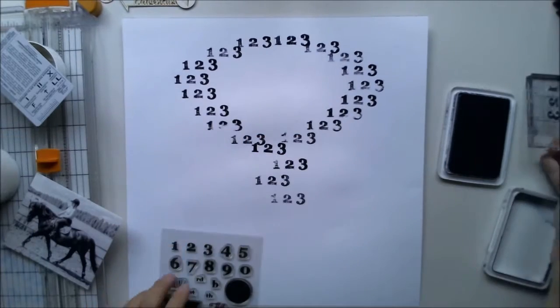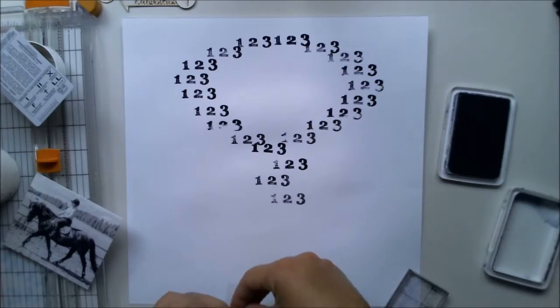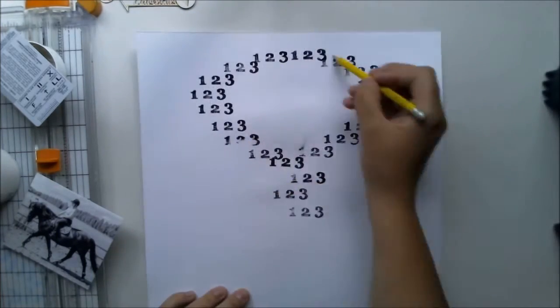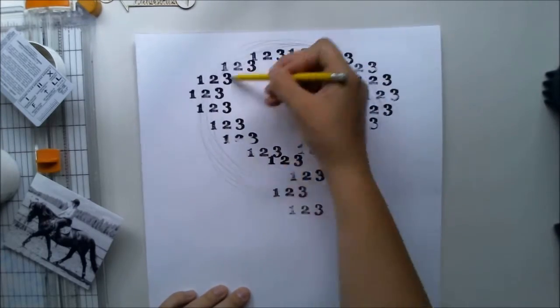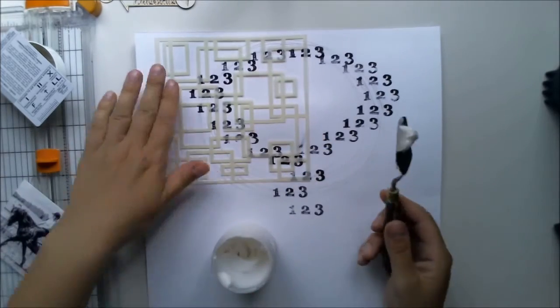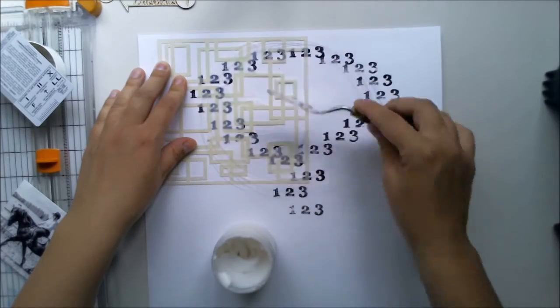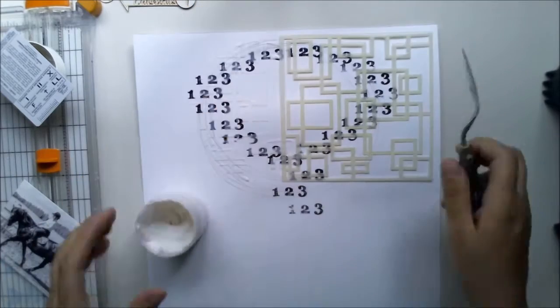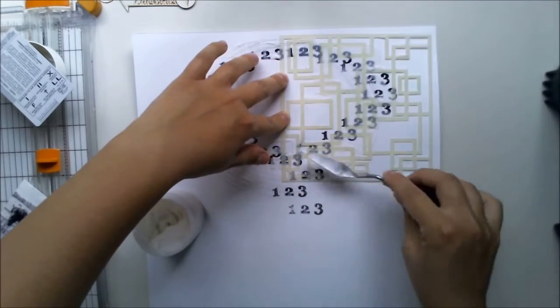Once I'm happy with my stamping I'm doing some random circles and then using my boxes stencil from Create a Smile. I'm using gel medium with the stencil, choosing gel medium instead of gesso or modeling paste to make a transparent background. I want those numbers to shine through the layers.